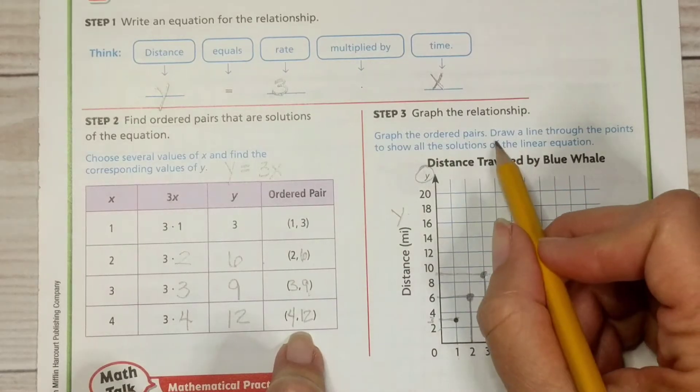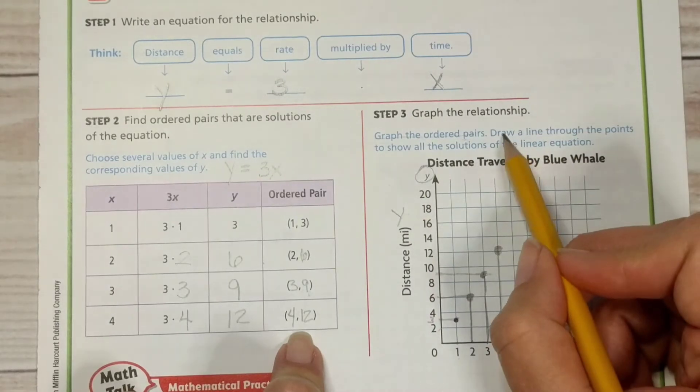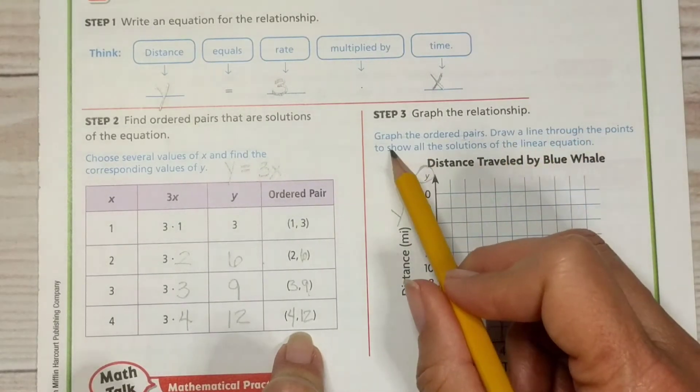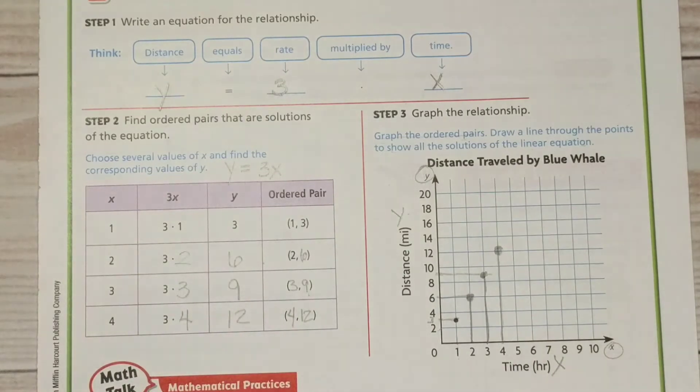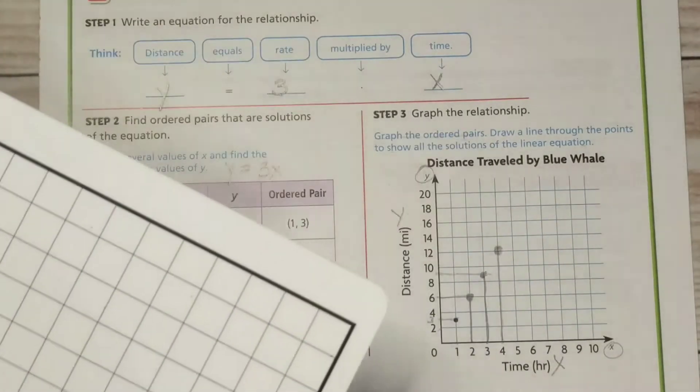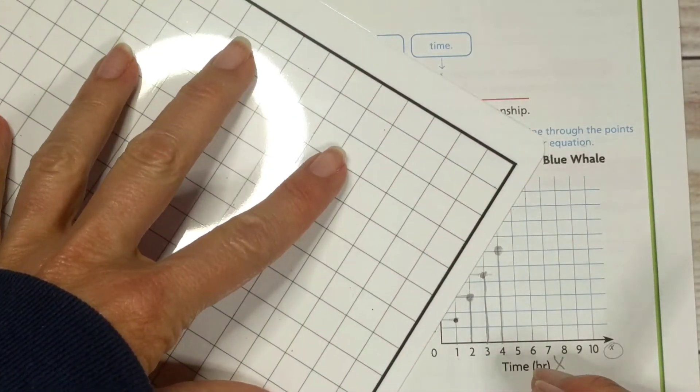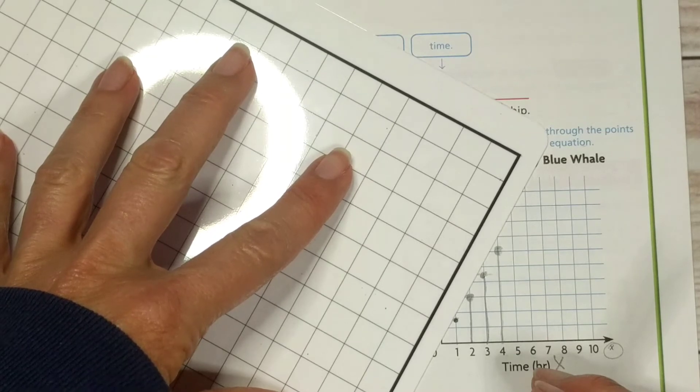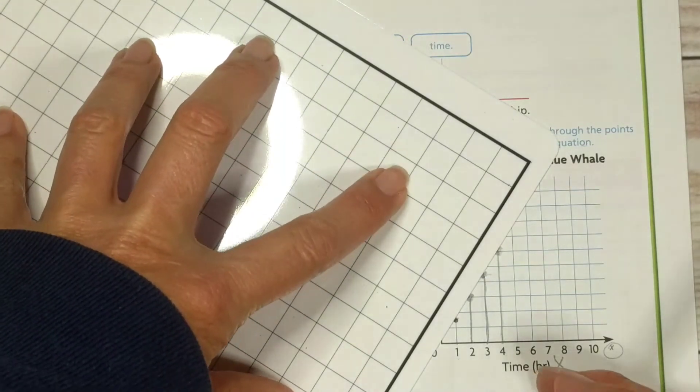All right. Then it says, so we graphed the ordered pairs. We did the first part. This is done now. Now it says draw a line through the points to show all the solutions of the linear equation. So in order to make it accurate, it's really great if you have some kind of a straight edge. You can use a ruler or just a piece of paper. I'm using my little graph paper here.